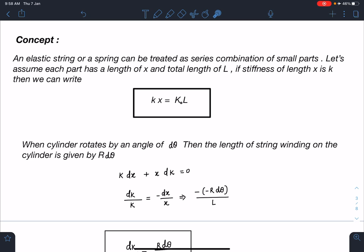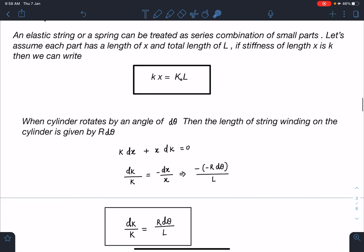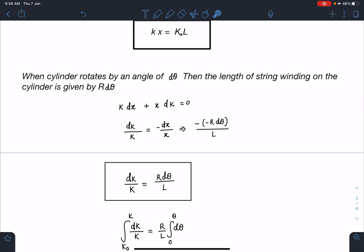If I differentiate this equation, the right side is a constant, so I am going to get k dx plus x dk. If I simplify this, dk/k is minus dx/x. Now this dx is basically related to the change in length when original length is L and the angle rotated is dθ. So R dθ will work as dx, and since it is decreasing, minus of minus R dθ I am writing. So I am going to get dk/k as R dθ/L.